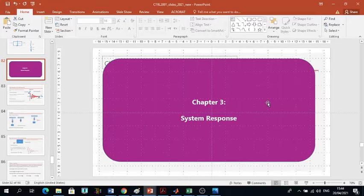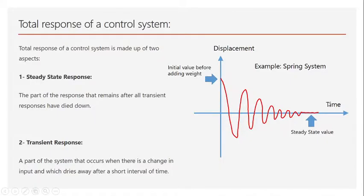We are talking about system response, which is part of Chapter 3 of the reference book. We can separate the response of any particular system into two categories. Category one is called steady state response — that is a kind of permanent response that we get out of a system and it remains for a long time. Category two is transient response.